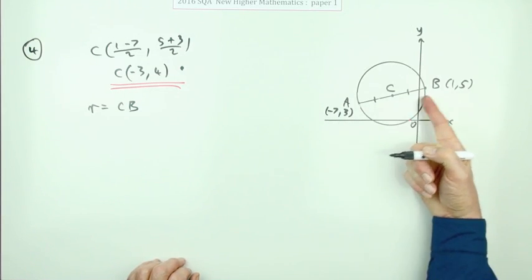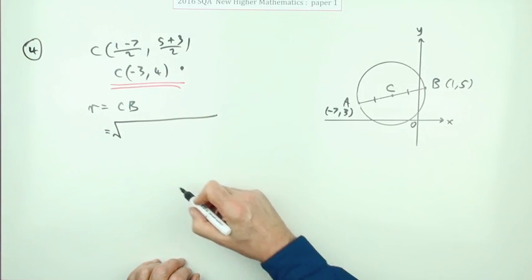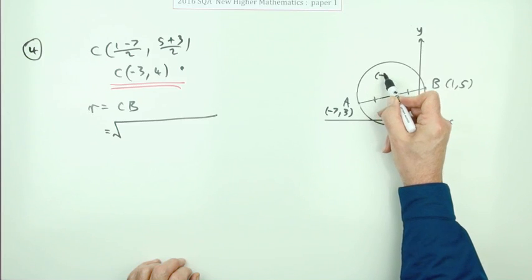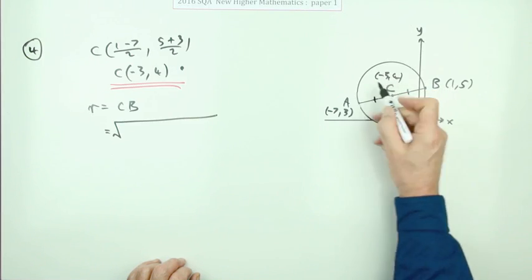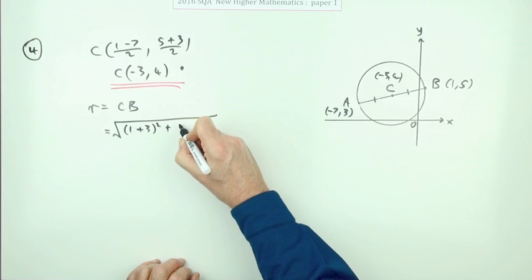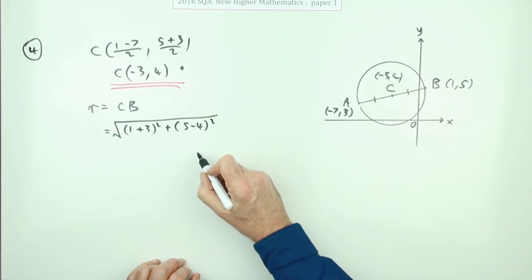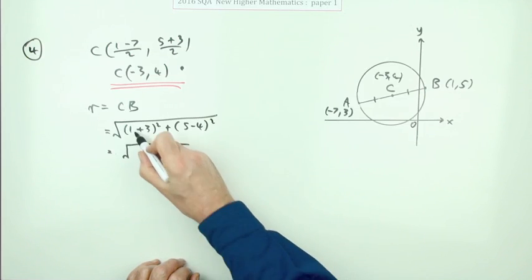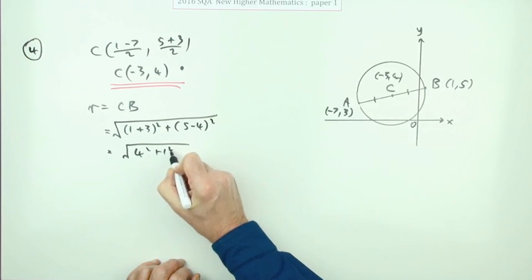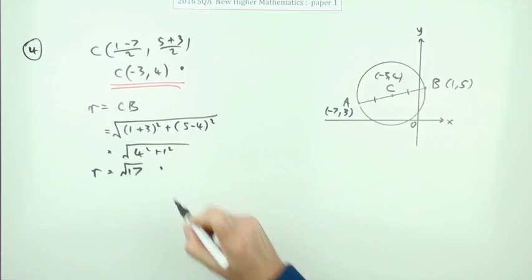So distance from C to B. You could use the formal formula, which is the difference in the x coordinates. Remember, C is now at negative three, four. So it's one take away negative three, which probably makes one plus three, and five take away four, difference in the y coordinates squared. So it's going to be the square root of four squared plus one squared. So that's root 17. That would get a mark.